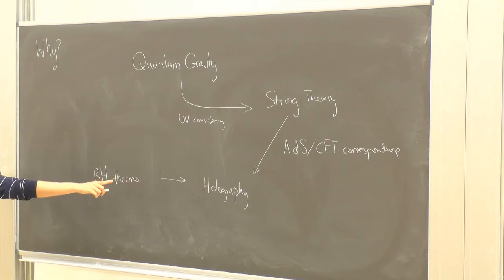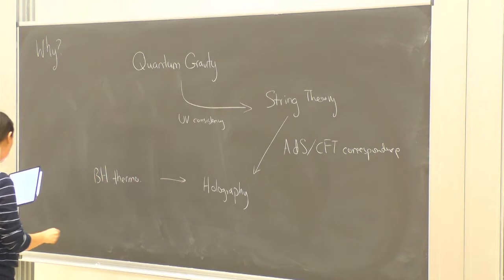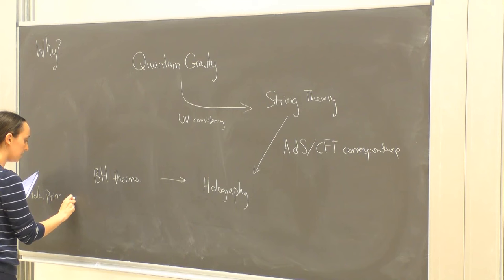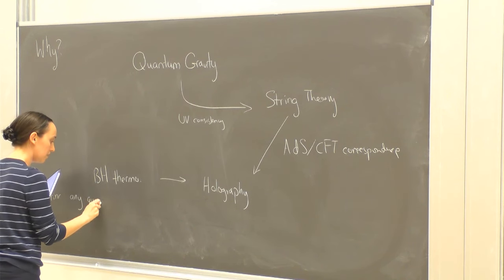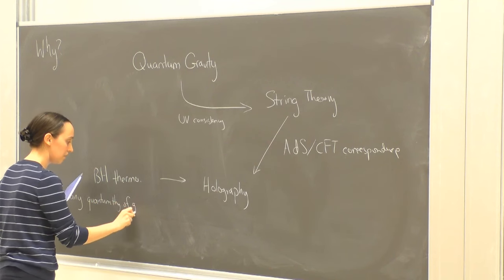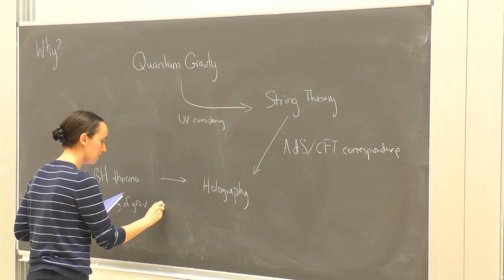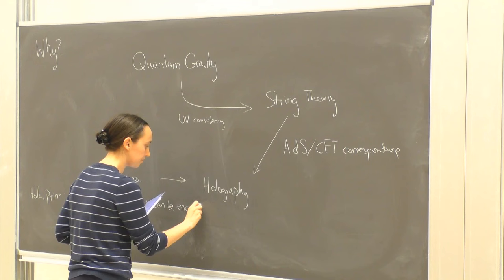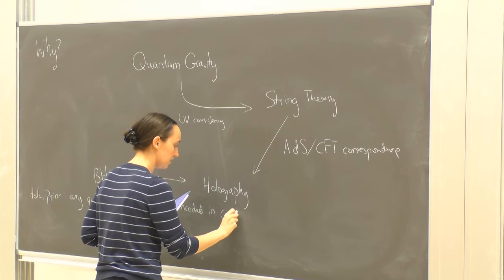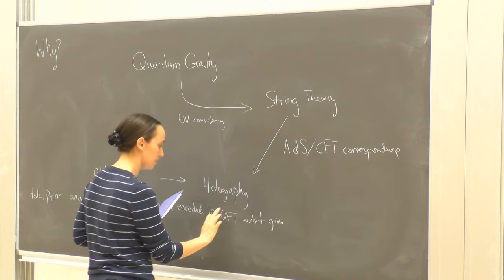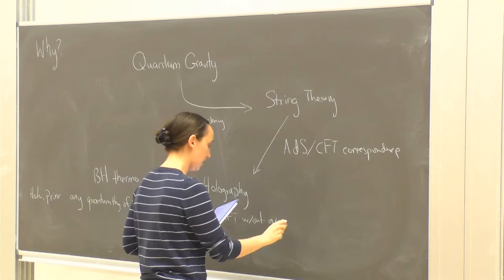Celestial holography is about trying to understand how to apply the holographic principle in the flat limit. For younger students here: the holographic principle is telling us that we think any quantum theory of gravity can be encoded in a non-gravitational theory — basically a QFT without gravity — and it will actually be a conformal field theory at the boundary.